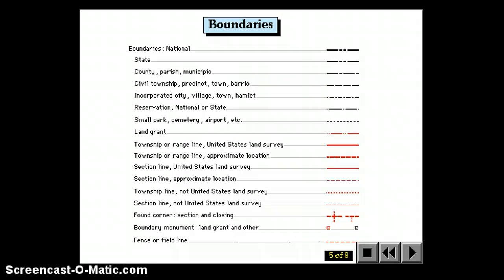Boundaries all have specific types of symbols, whether they're national boundaries, state boundaries, county boundaries, section lines. The township and range are typically in red, and the other boundaries, whether they're state or county or parks or national, tend to be in black.